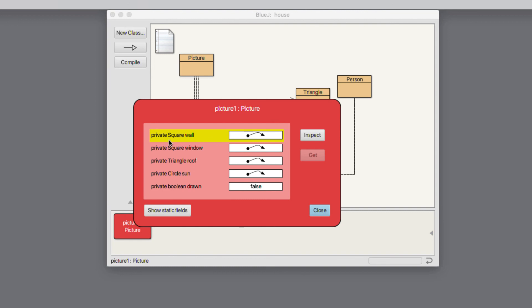What we're actually seeing are words like square and triangle and circle. And of course, those are all class types. Those are all the classes that we've written in the rest of the project.